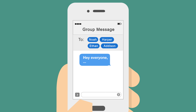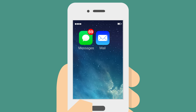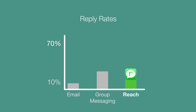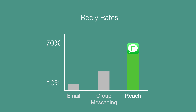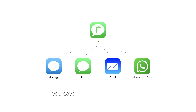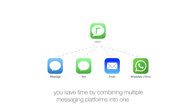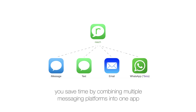With Reach, you get no more group chatter and endless notifications. You will also have much higher reply rates, because your messages are individually addressed. Plus, you save time by combining multiple messaging platforms into one app.